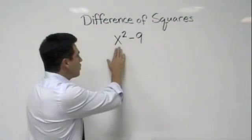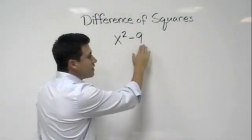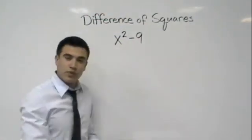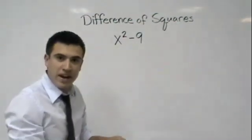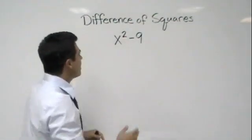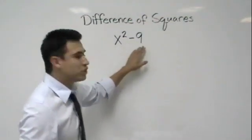If we were to take the square root of x squared, we would see that it's x. And if we were to take the square root of 9, we would know that it's 3. So those two terms are perfect squares. And then that minus sign means difference, so it's the difference of two squares.